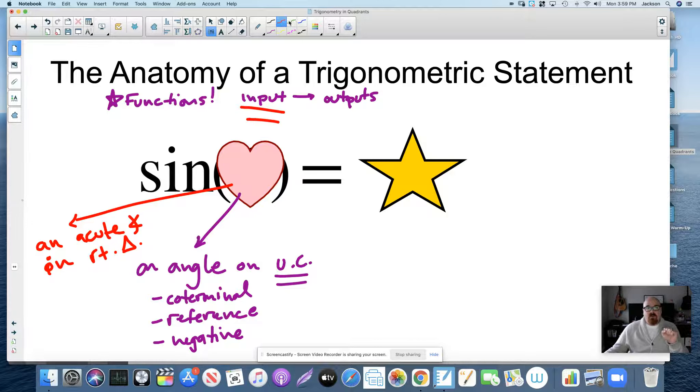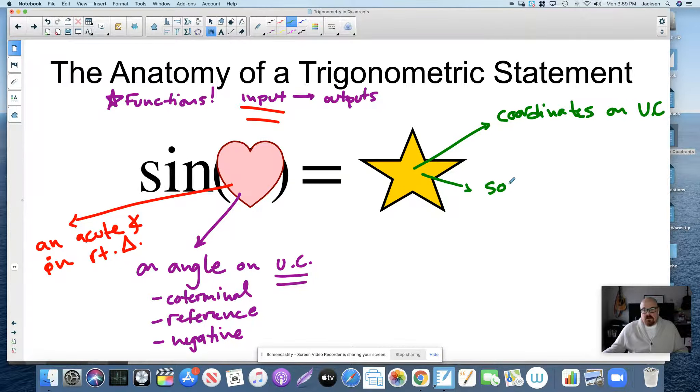What are our outputs? Again, why did I use this star? The outputs for a function are either coordinates on the unit circle, or it could be a ratio, right? So let's say a ratio of sides in a right triangle.